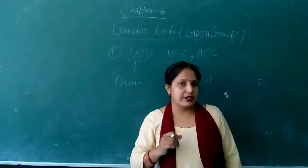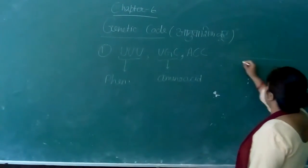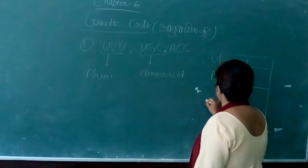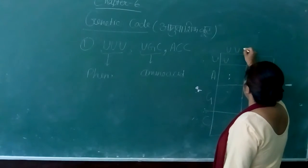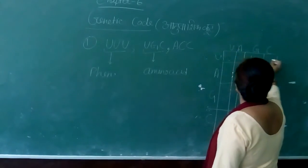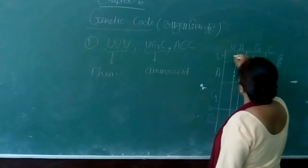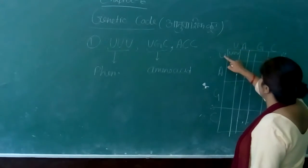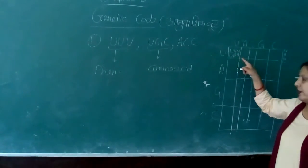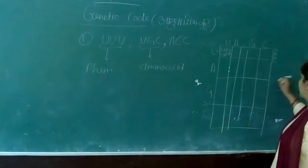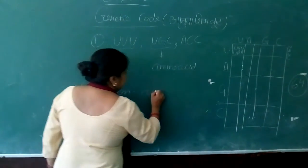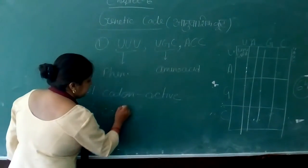64 codons are discovered. We have a codon checkerboard showing how these code. Of the 64 codons, 61 code for different amino acids. Three codons do not code for amino acids.